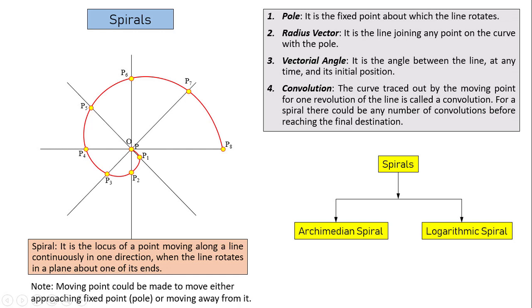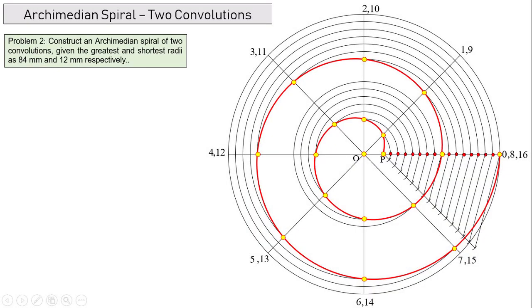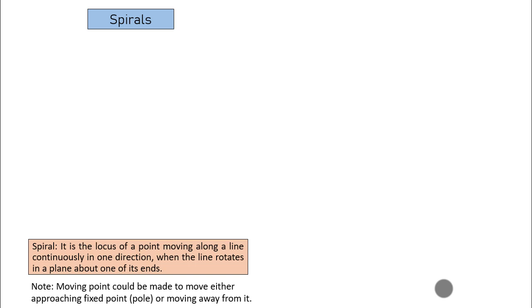It's going to take three to four days maximum. The first video is going to be all about giving you a general introduction as to what a spiral is, and we'll also take a look at Archimedean spiral and the different terms associated with that. We'll also do construction for one convolution and for two convolutions of an Archimedean spiral. Then in the second video we'll learn the basics of a logarithmic spiral. In the final video, video 3, it's going to be all about how to put up tangent and normal at any given point on a spiral.